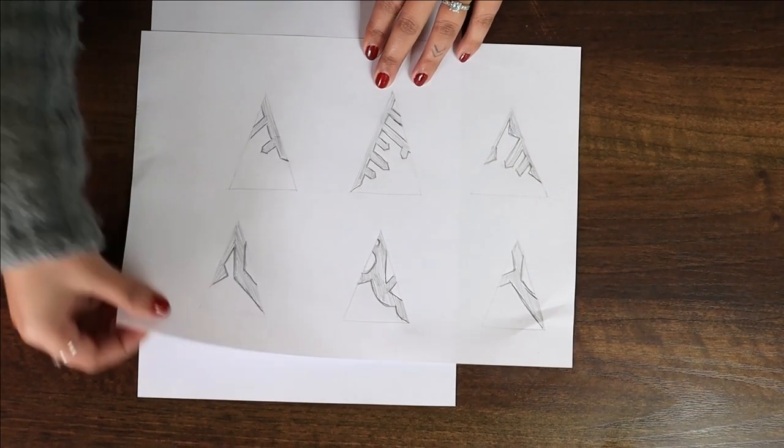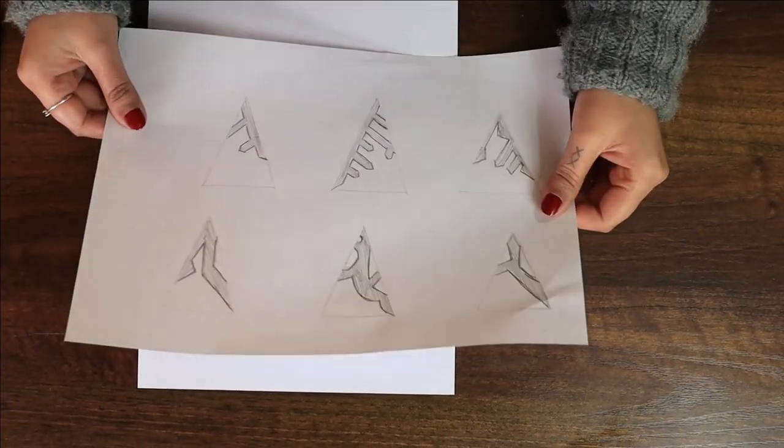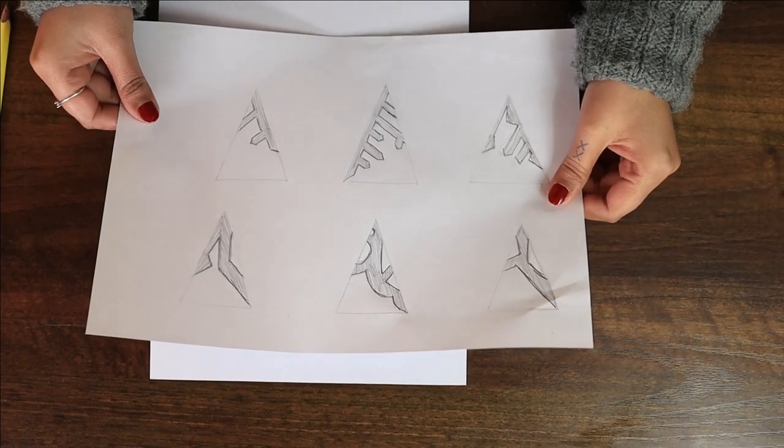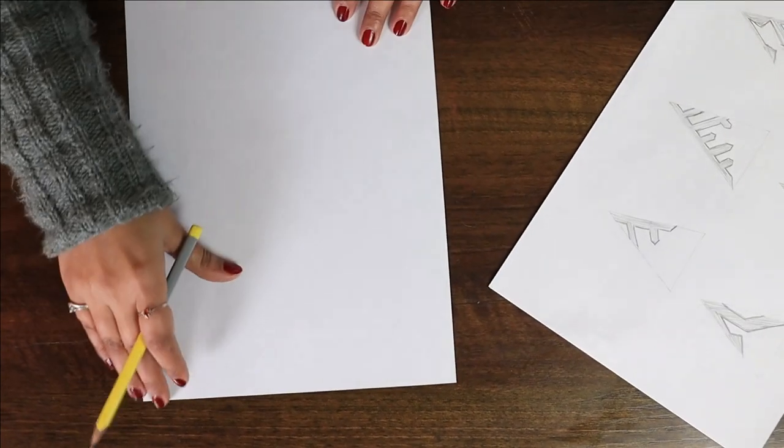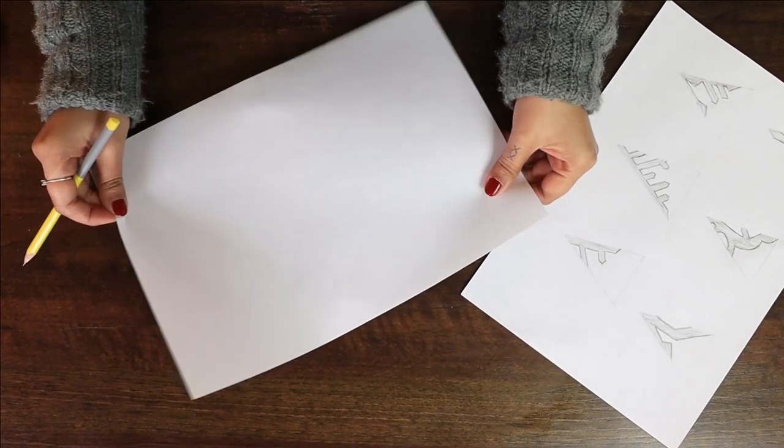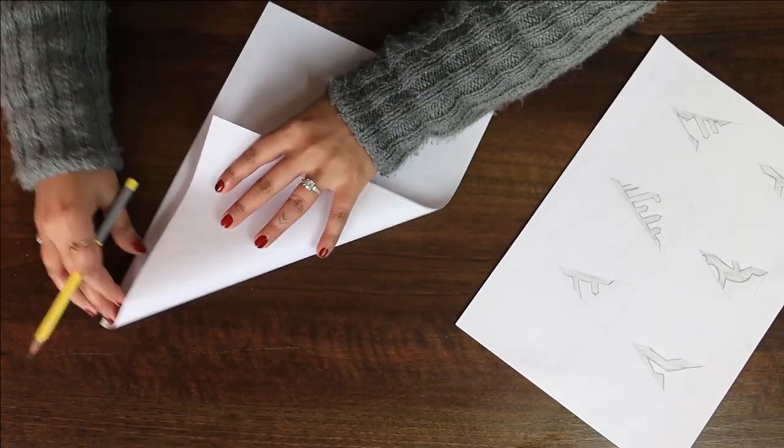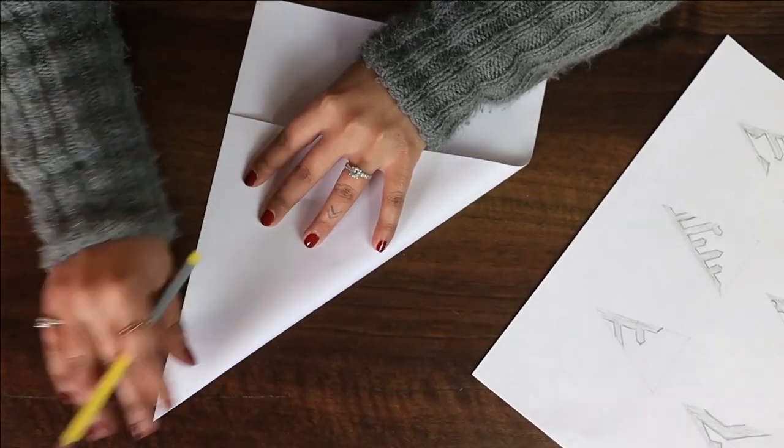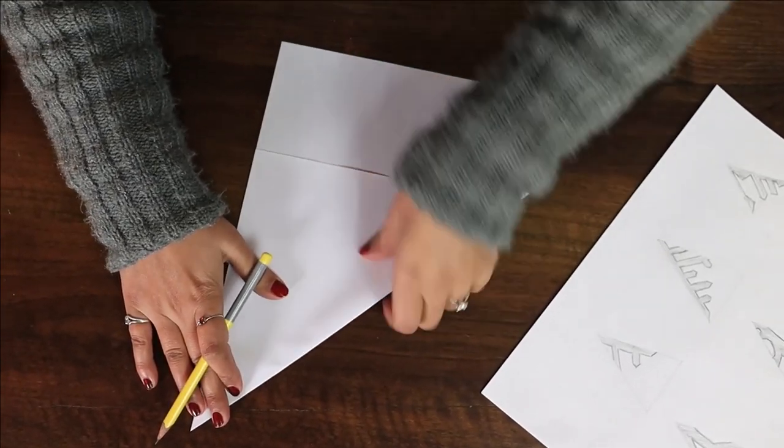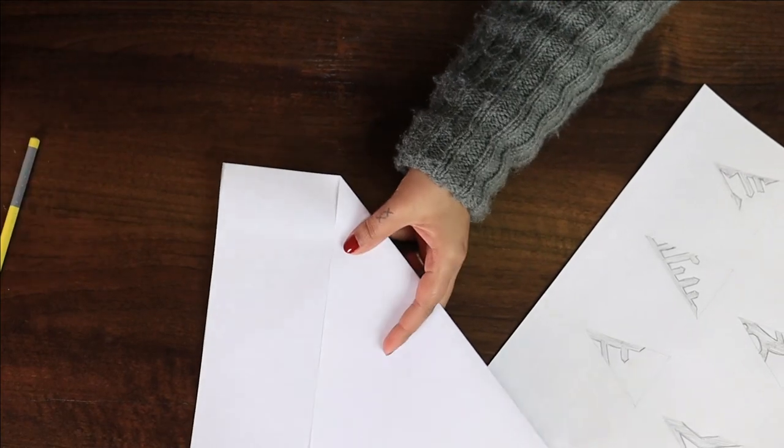Here I have drawn a template of different snowflake patterns which you can download from the link below. Now we are going to take a rectangular sheet of white paper, fold it like this to make a triangle, and cut off the spare paper.